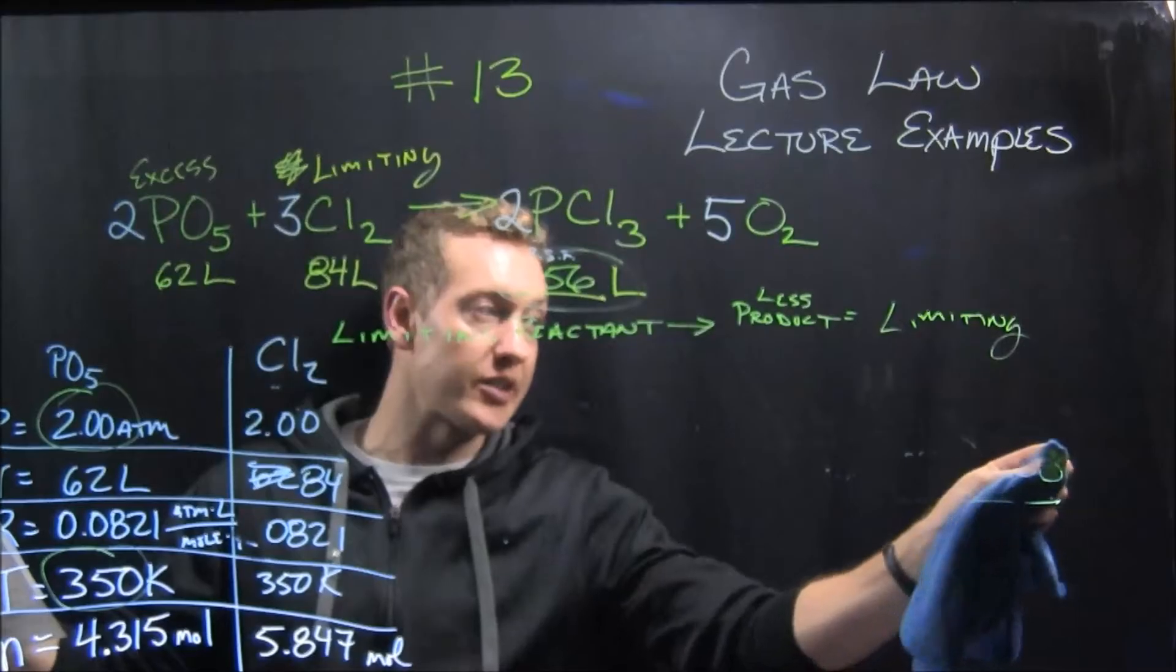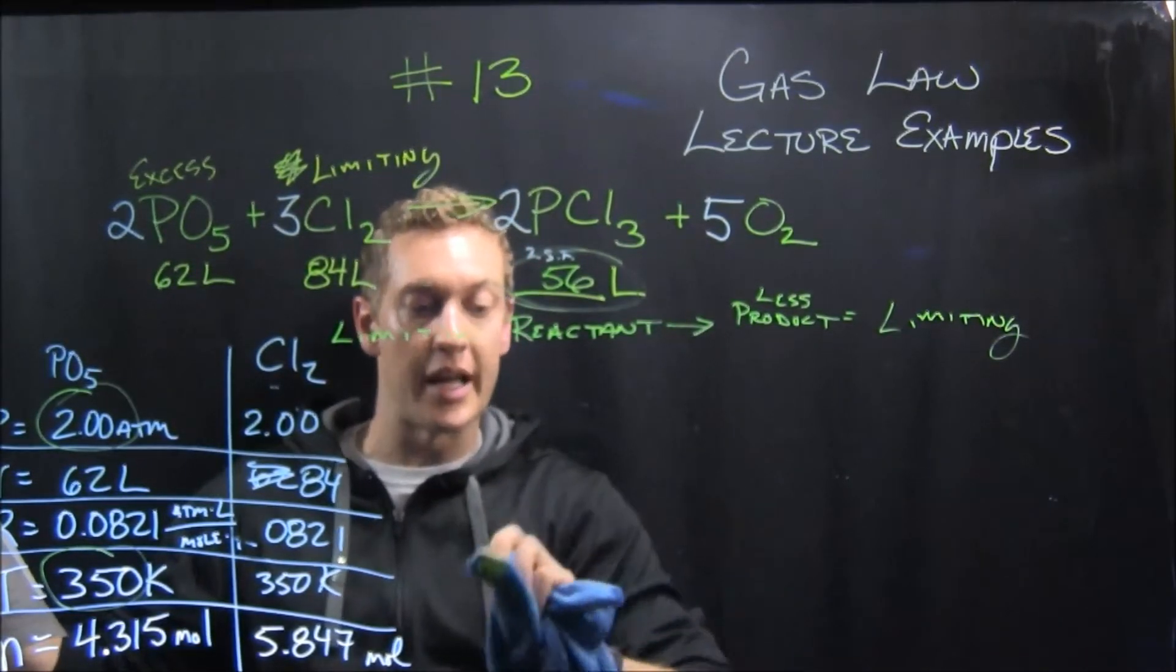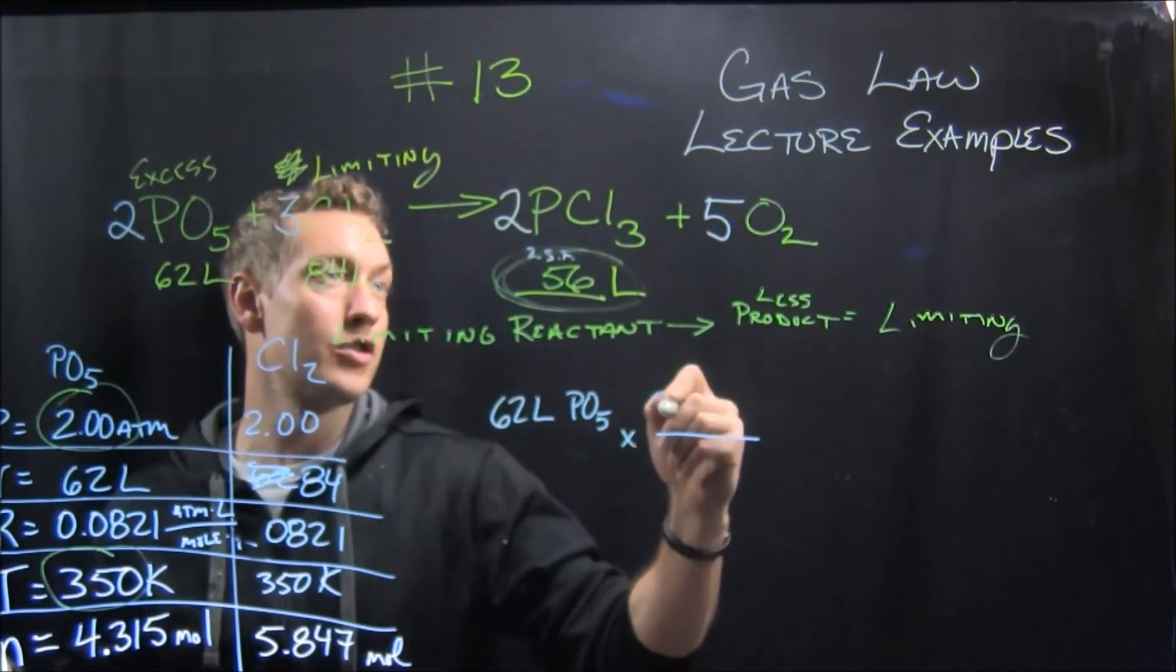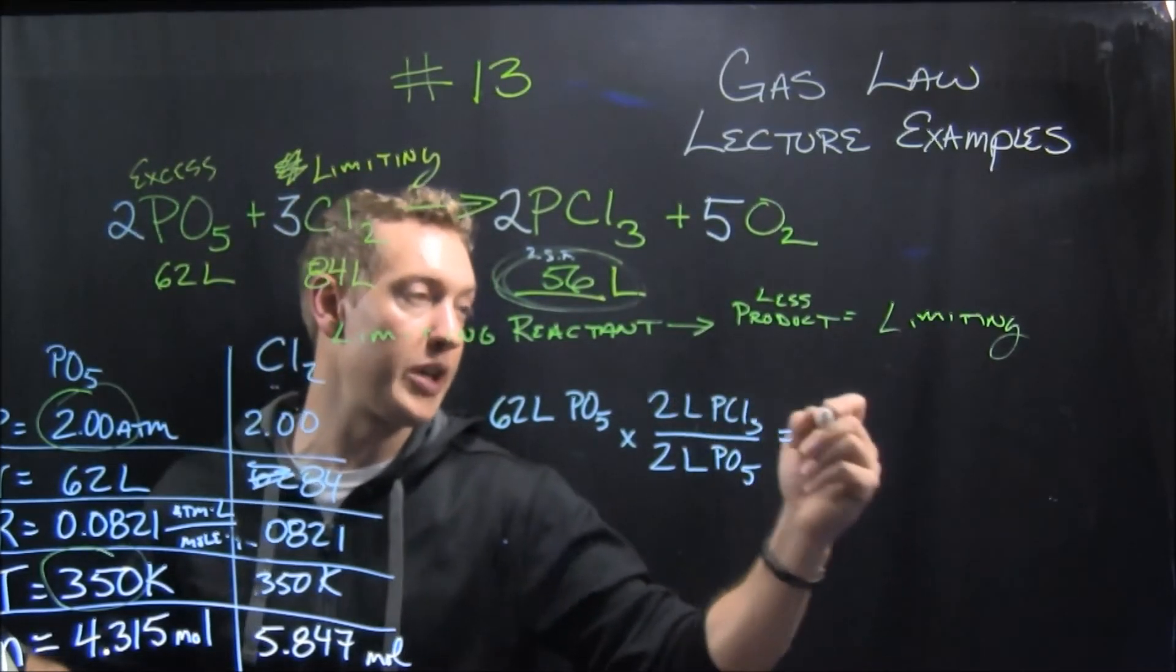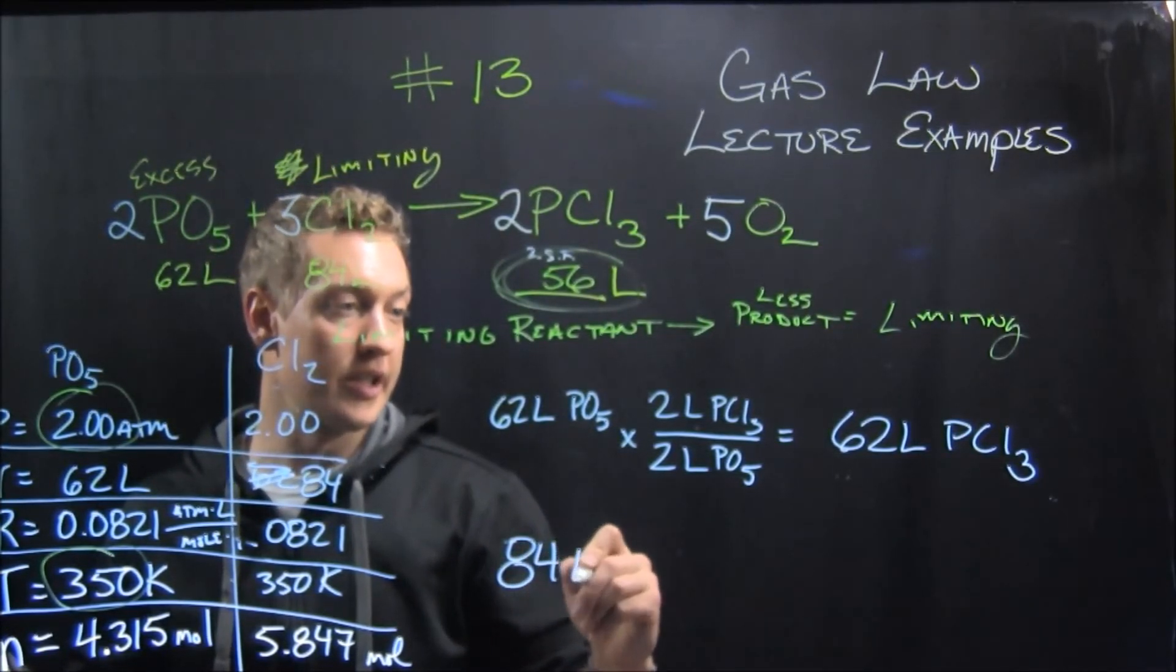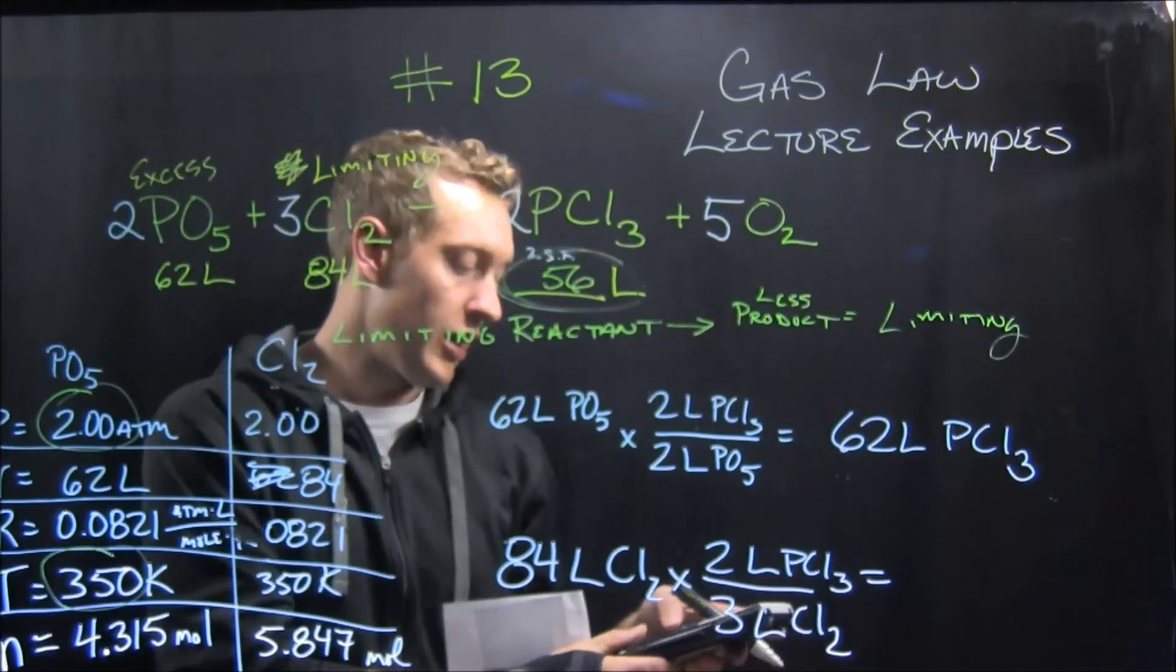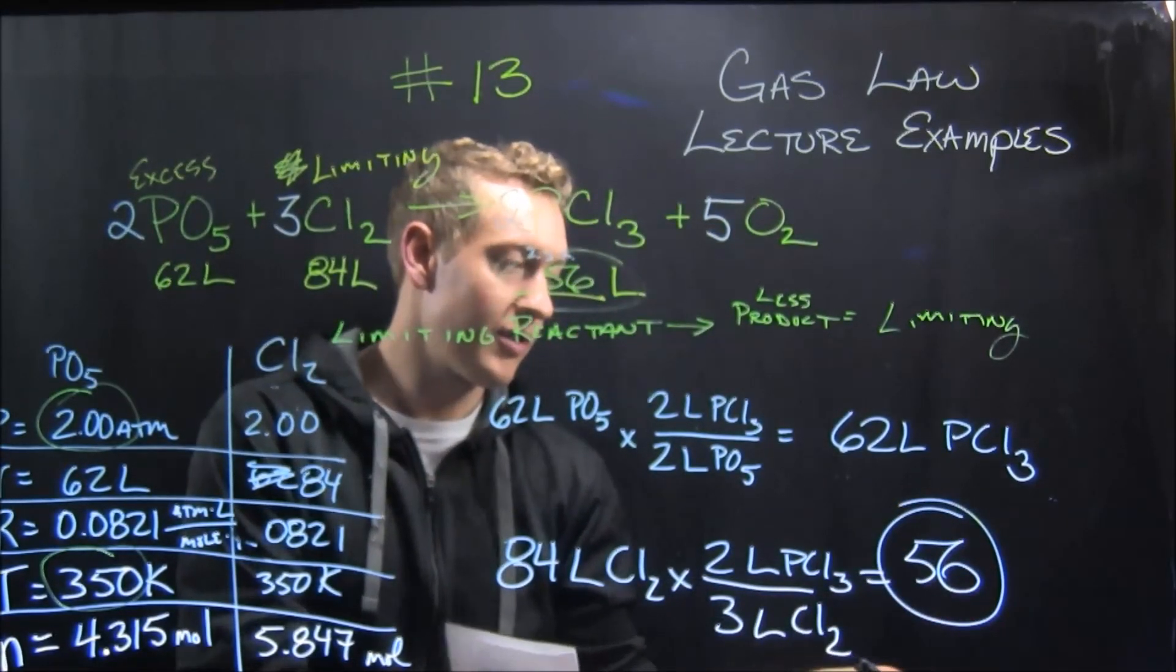So it's going to drastically simplify what we just did. And so in reality, we could have worked that whole problem out. We're probably going on 10 minutes now, but I could just set it up as 62 liters of PO5 times 2 liters of PCL-3 for every 2 liters of PO5. And so that means I have enough PO5 to make 62 liters of PCL-3. And then same deal of 84 liters of CL-2 times and 2 liters of PCL-3 for every 3 liters of CL-2. Punch that into your calculator, 84 times 2 thirds, and you get, well, 56. So, it's, and that'd be liters.